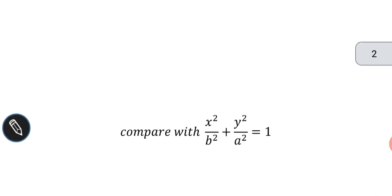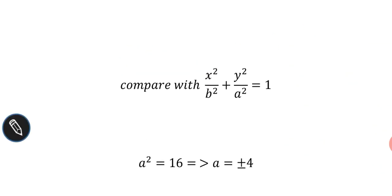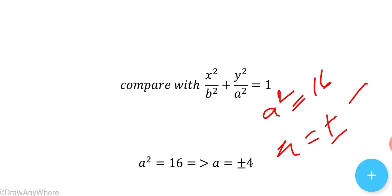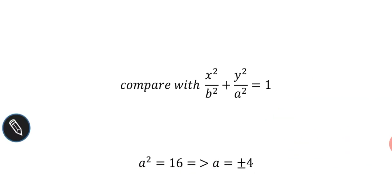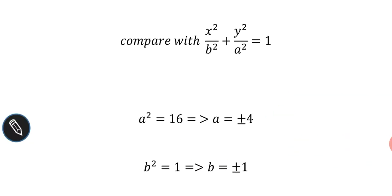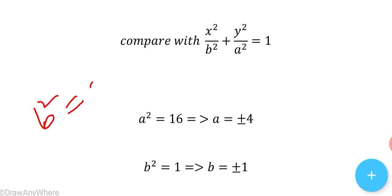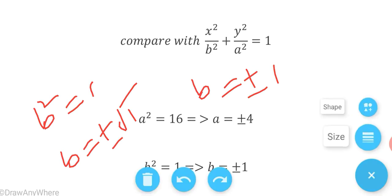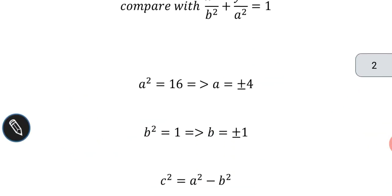On comparison, a² = 16, so a = ±√16 = ±4. Similarly, b² = 1, so b = ±√1 = ±1.